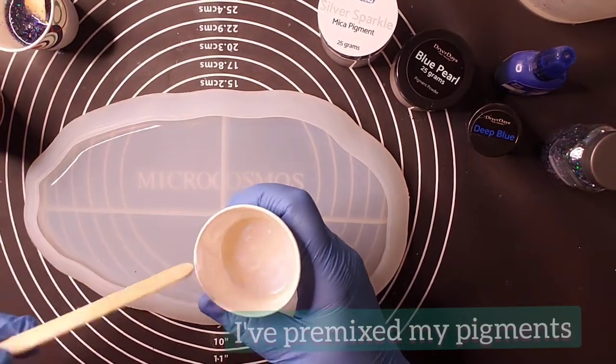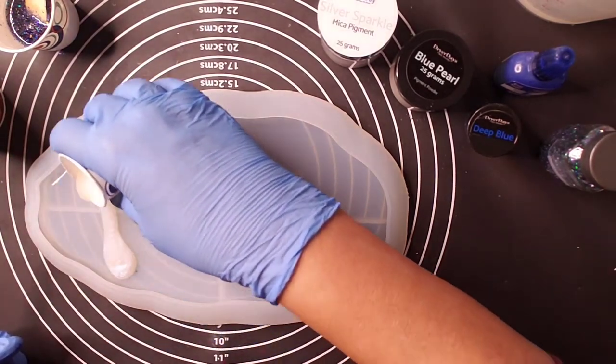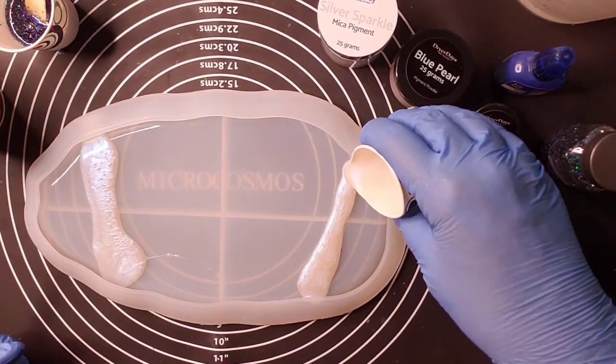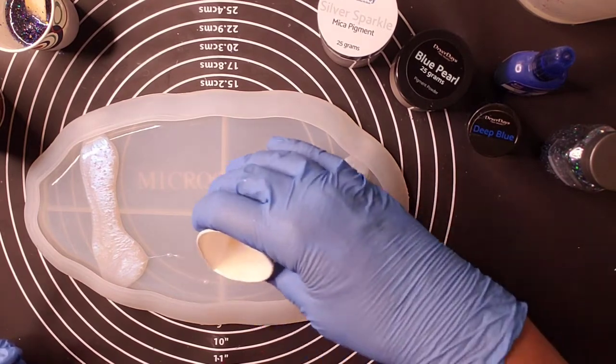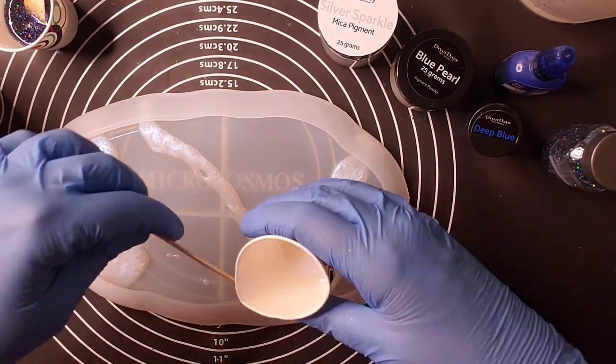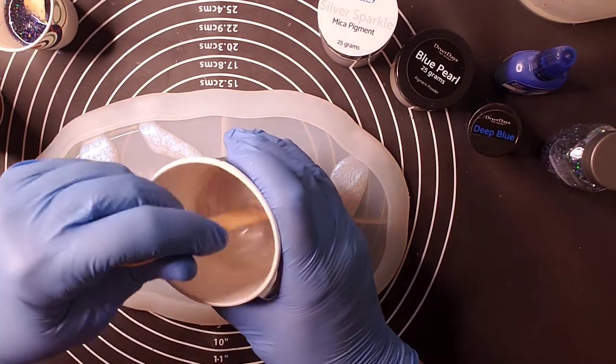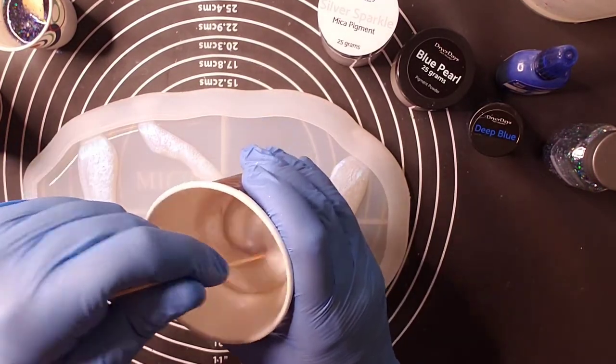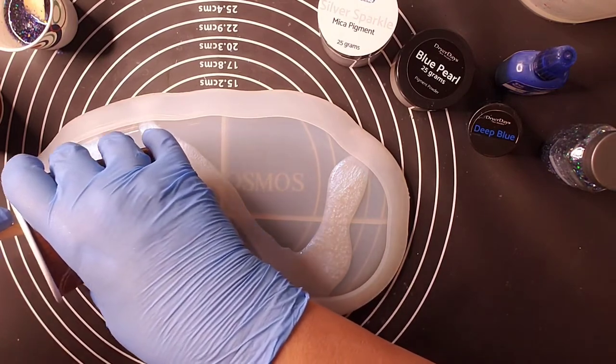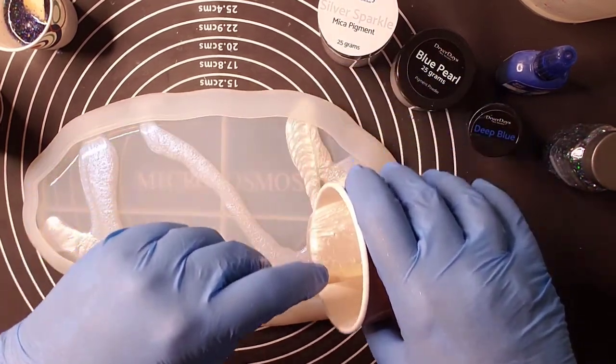First I'm going to be pouring in just a bit of my blue pearl. I use this particular pigment quite a bit. I just love the effects that it gives. And then my sparkle silver. This is the first time I've used this. It's a new pigment at Dryer Days Art Studio and I was super impressed with the shine that it gave me. You can even see here on the video just the sparkle that it gives.